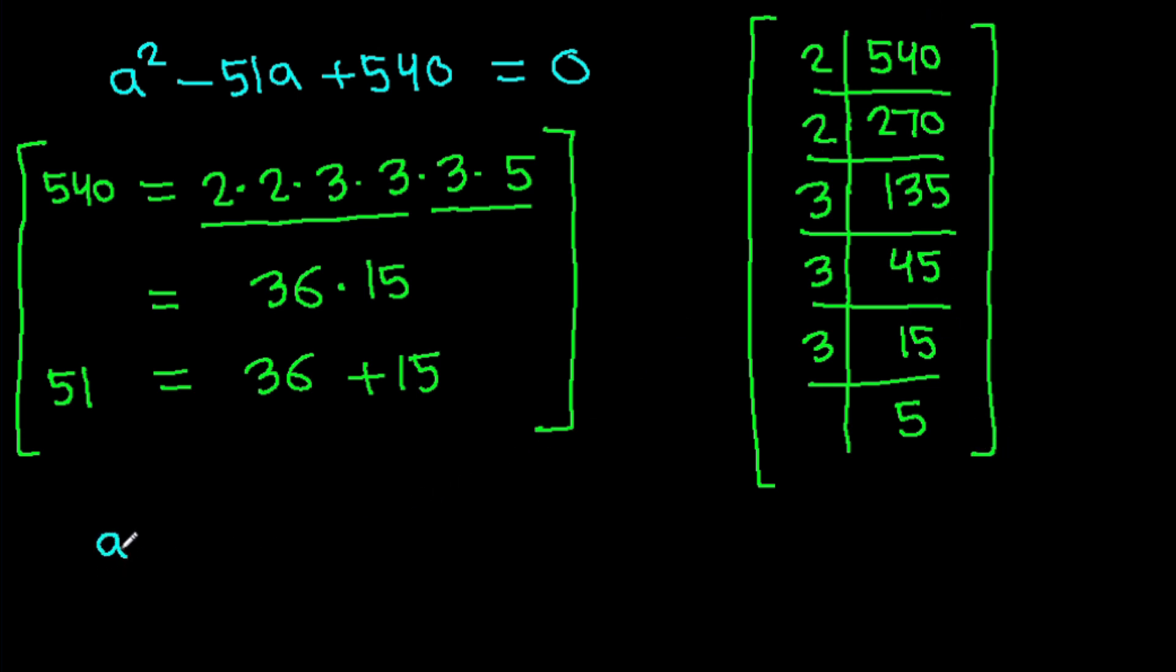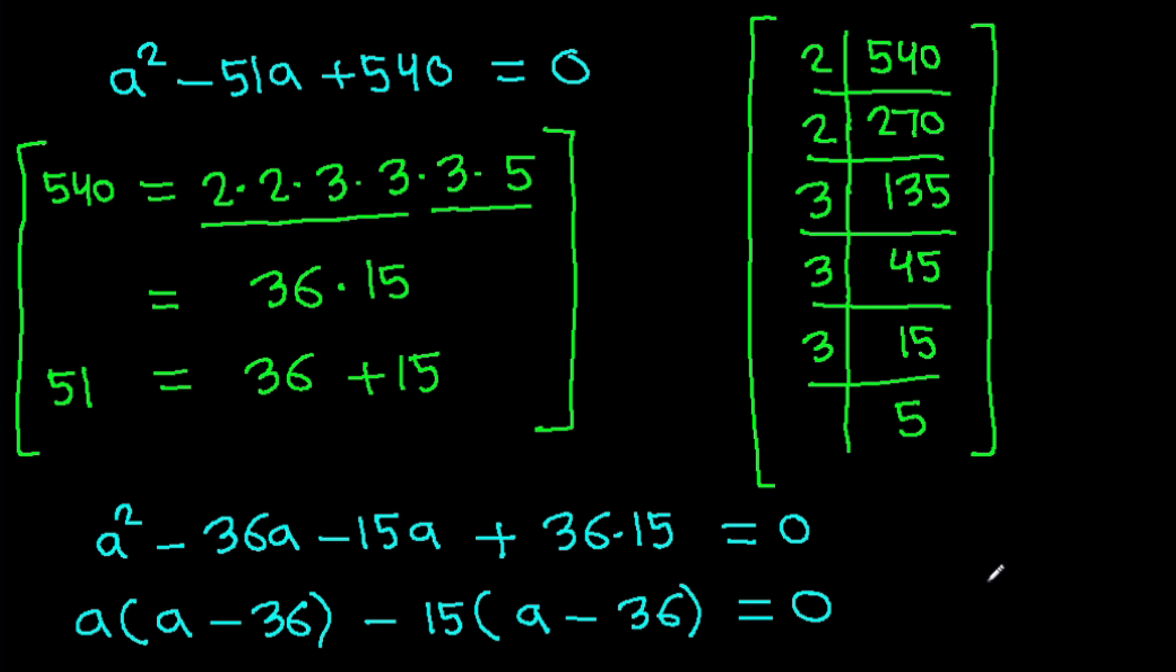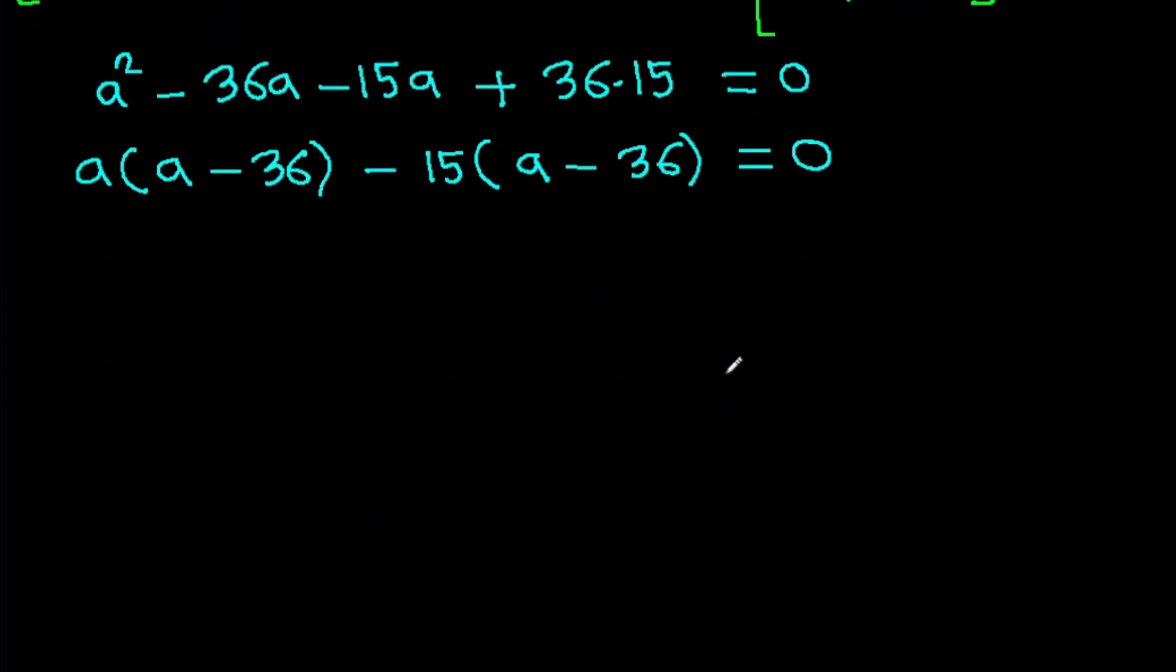So it is a squared minus 51a will be minus 36a minus 15a, minus 540 is 36 times 15, equals 0. And it is a times a minus 36 minus 15 times a minus 36 equals 0, so a minus 15 times a minus 36 equals 0.